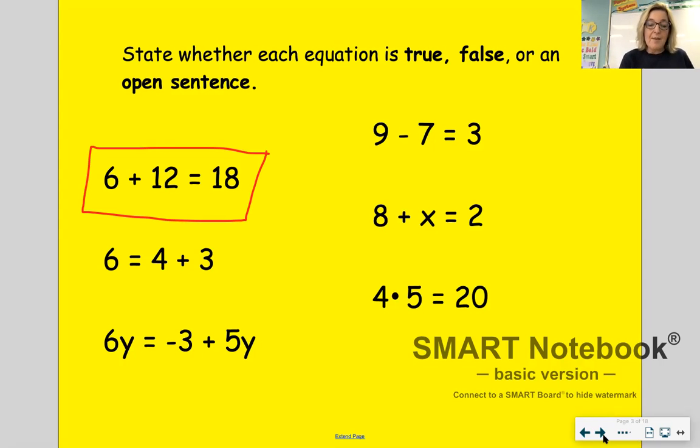6 plus is equal to 4 plus 3 is an equation because it has an equal sign, but it's false because it's not true. 6 doesn't equal 4 plus 3.